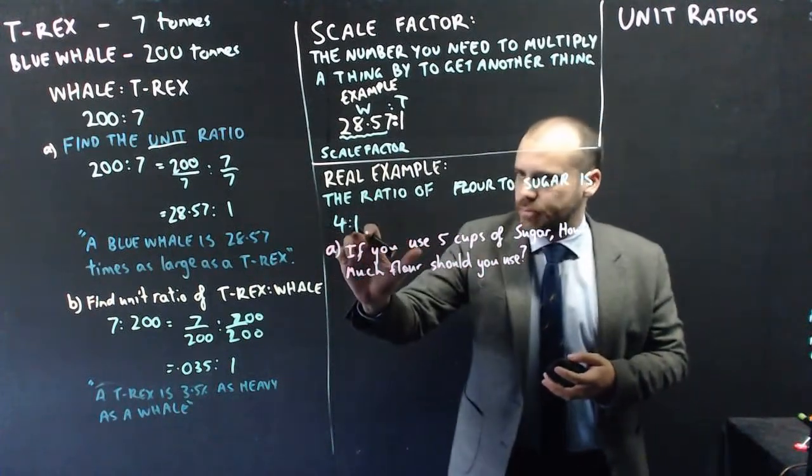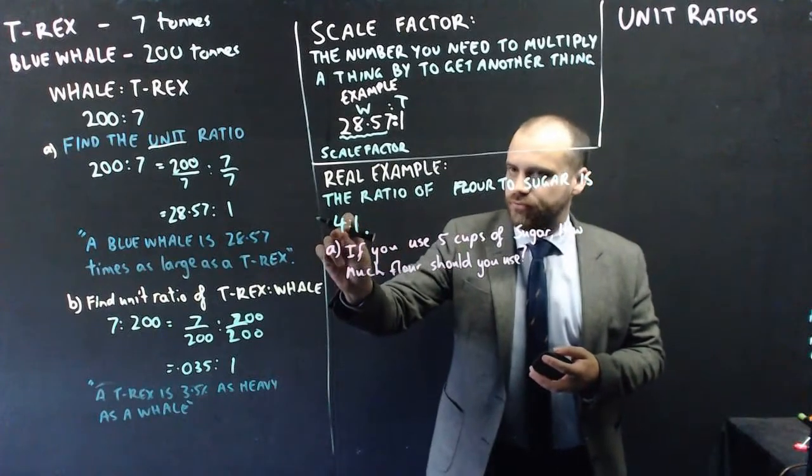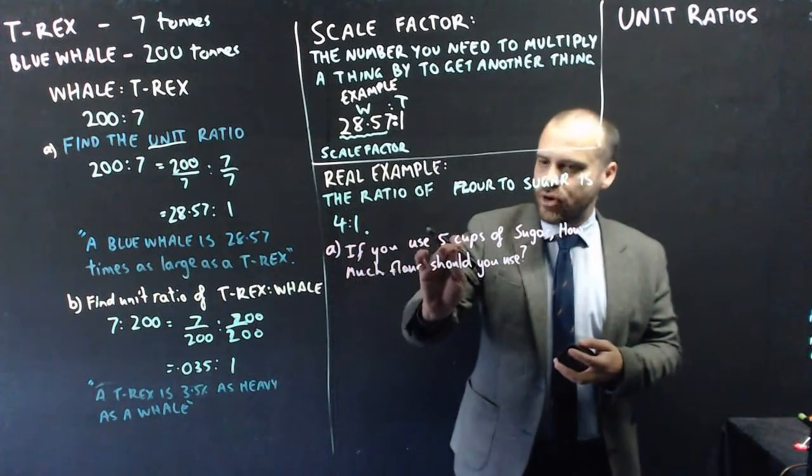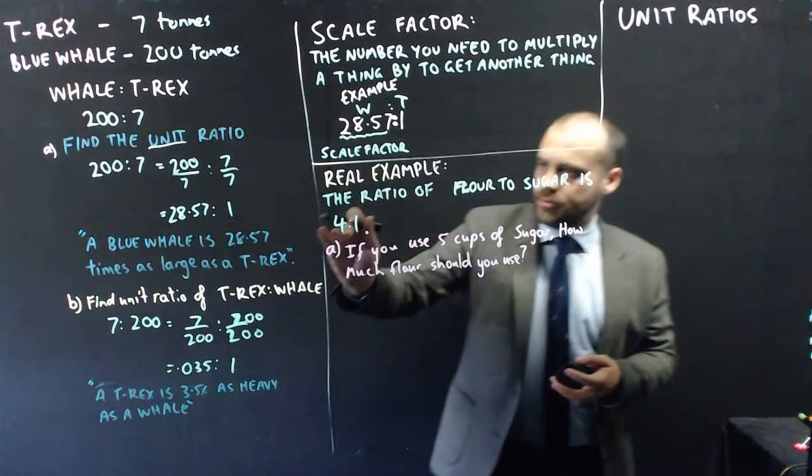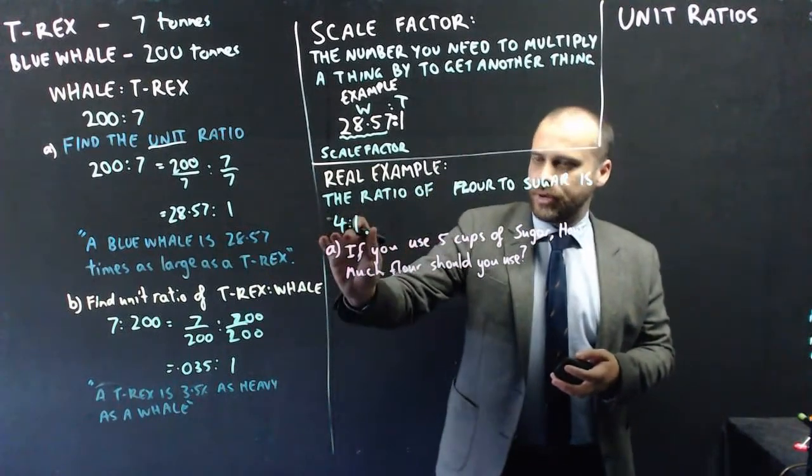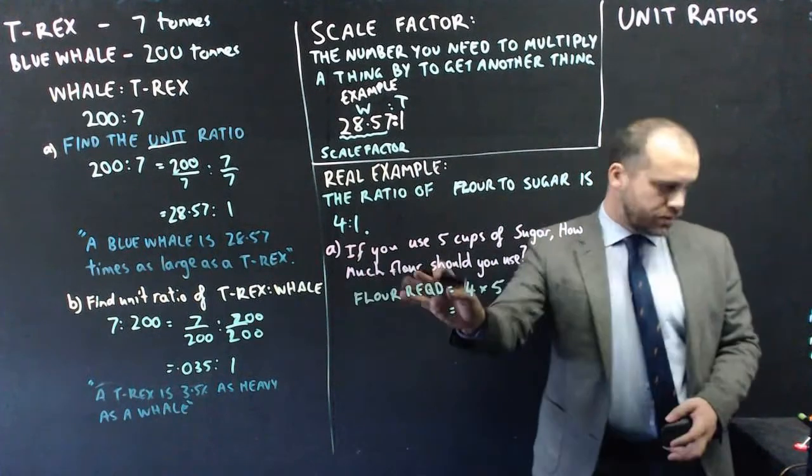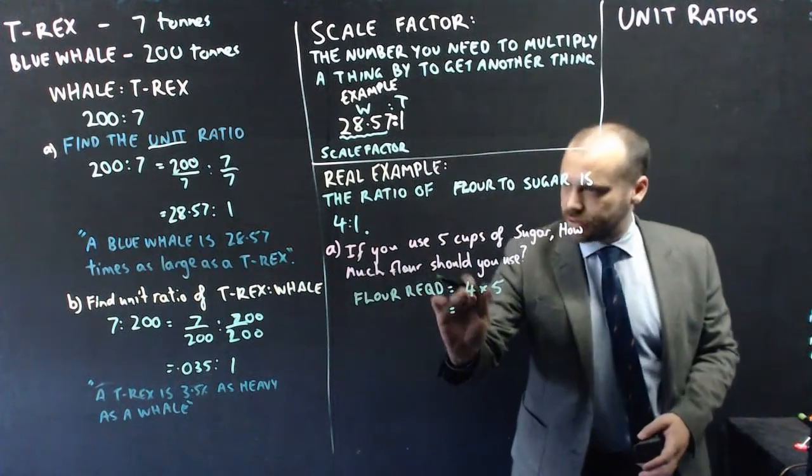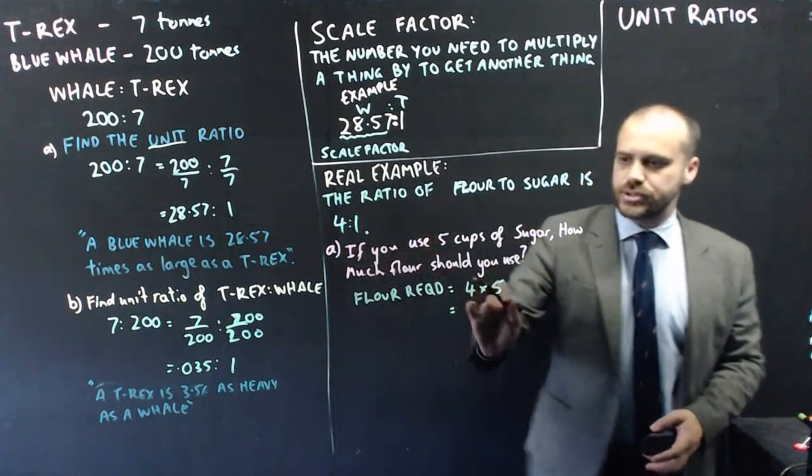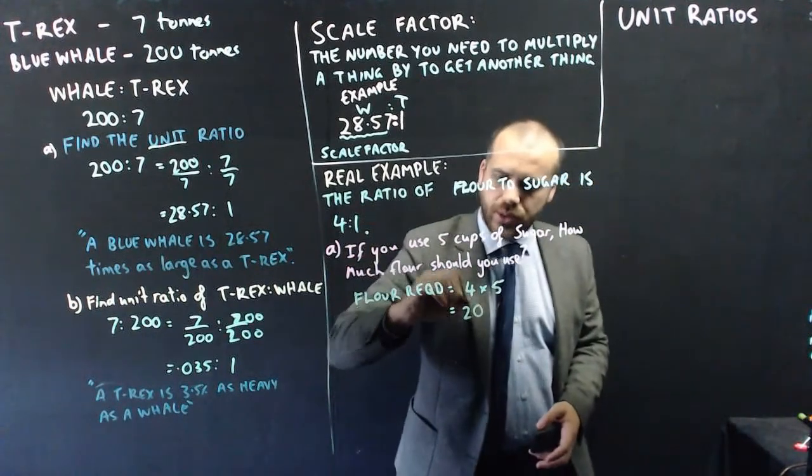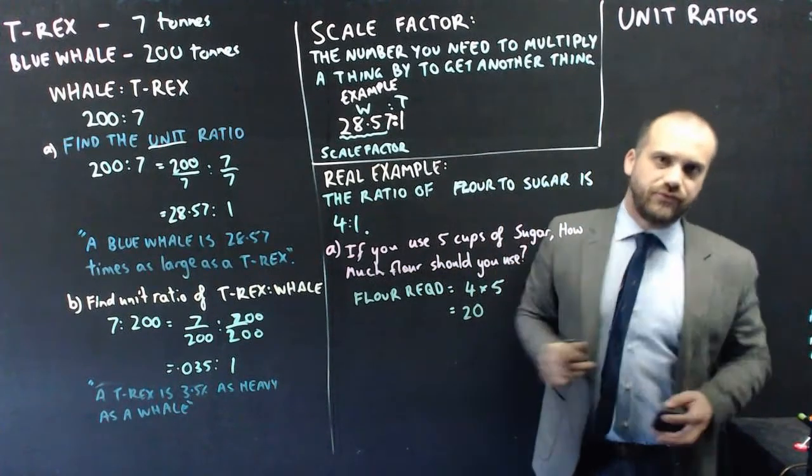Sugar is the number 1. Flour is the number 4. So, if we're using 5 cups of sugar, we then scale up by 4. Scale that number up by 4 to find out how much flour we would need. So, the flour required is equal to the scale factor times the number of our unit that we're using. So, 4 times 5, which is 20. So, we need 20 cups of flour.